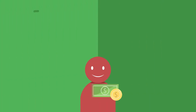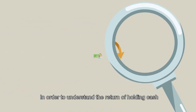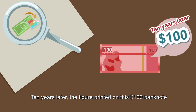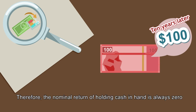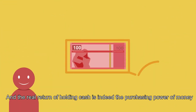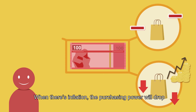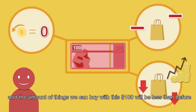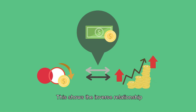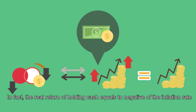In addition to the Fisher equation, we'll also discuss the return and cost of holding cash. To understand the return of holding cash, assume we have a $100 banknote. Ten years later, the figure printed on it will be exactly the same — so the nominal return of holding cash is always zero. The real return of holding cash is the purchasing power of money. When there's inflation, the purchasing power drops and the amount of things we can buy with $100 will be less than before, meaning the real return of this $100 is negative. This shows the inverse relationship between the real return of holding cash and the inflation rate. In fact, the real return of holding cash equals the negative of the inflation rate.